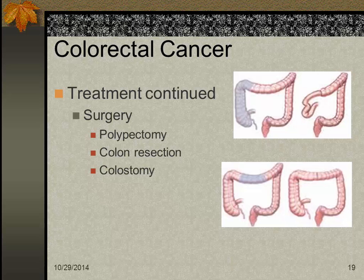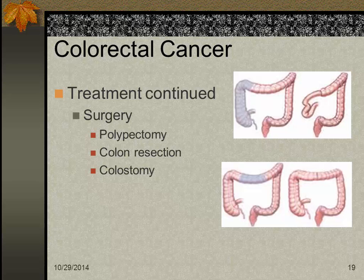When dealing with colorectal cancer affecting the rectum and sigmoid colon, the surgeon removes that portion and forms a stoma by bringing up the loop of colon to the abdomen for a colostomy, then sews the anus shut. Obviously no rectal temps or suppositories for this patient — always think about your patients.